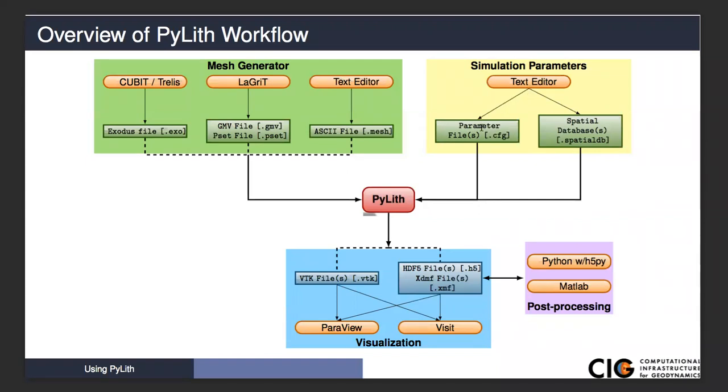In addition to your mesh, you need the simulation parameters. Generally, these are divided into two categories: parameter files with extension .cfg, which is the same format as some configuration file formats, and for a lot of our materials, boundary conditions, and so forth, we specify any spatial variation parameters in what we call spatial databases. We give these the suffix .spatialdb to identify that they are a spatial database and are different from our parameters.